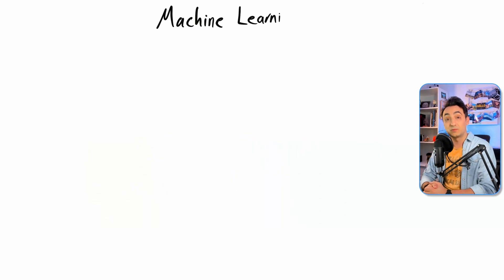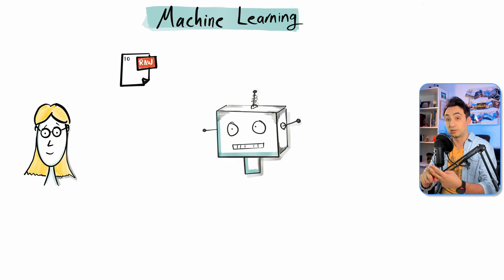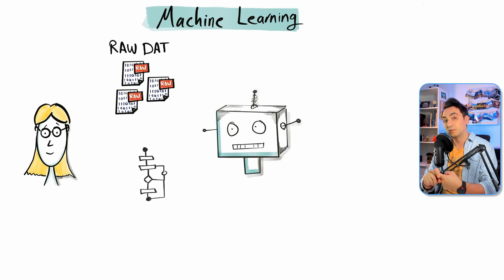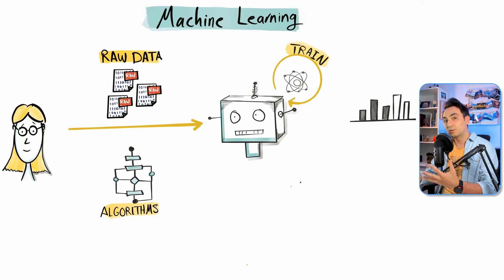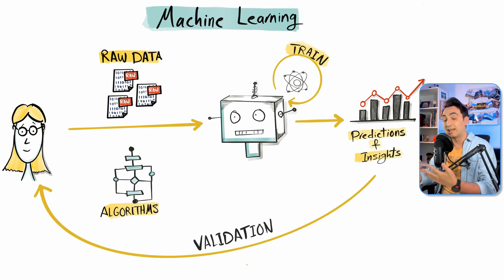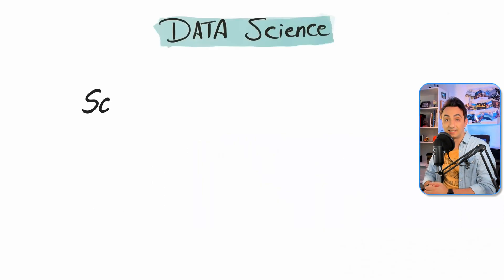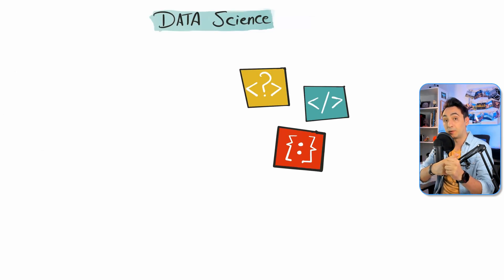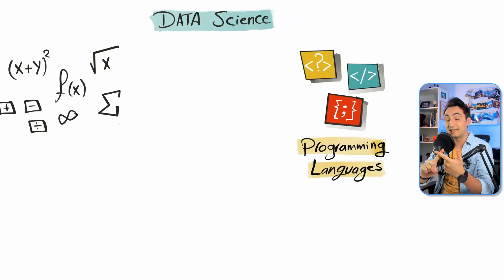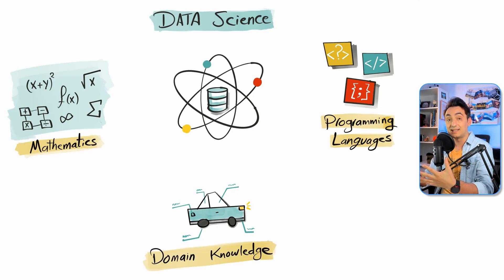Another use of raw data is machine learning. In machine learning, we provide computers with two things: first, raw and historical data, and second, mathematical models and algorithms. Once the computer has those two things, it starts training and practicing to perform tasks like predictions. The more the machine practices and trains, the better and more accurate the results become. Next, we have data science — the scientific study of data. It combines the power of programming languages together with mathematics, statistics, and domain knowledge to uncover valuable insights from raw data.